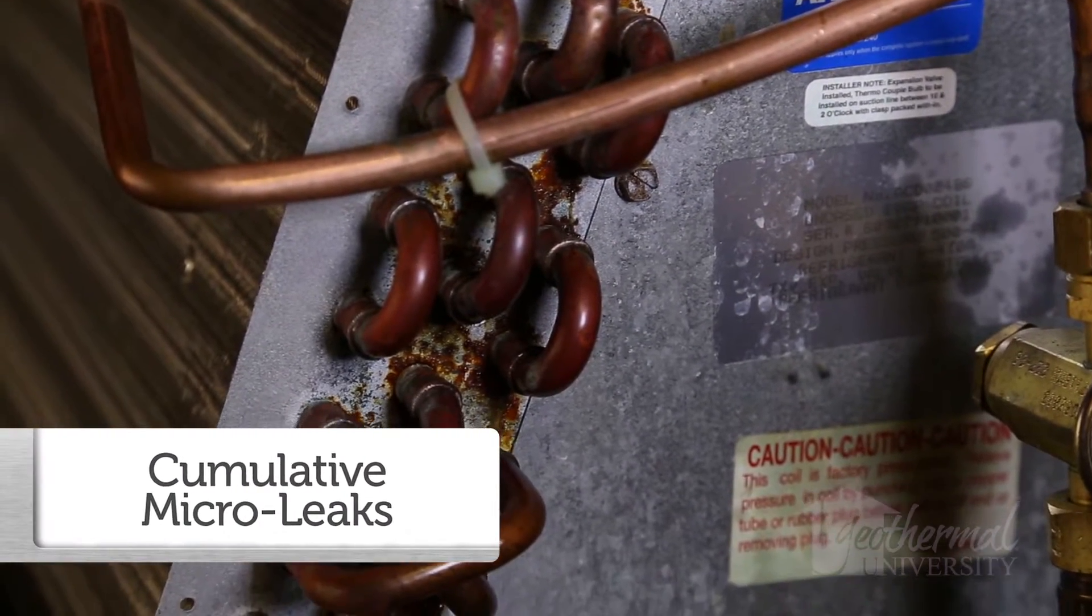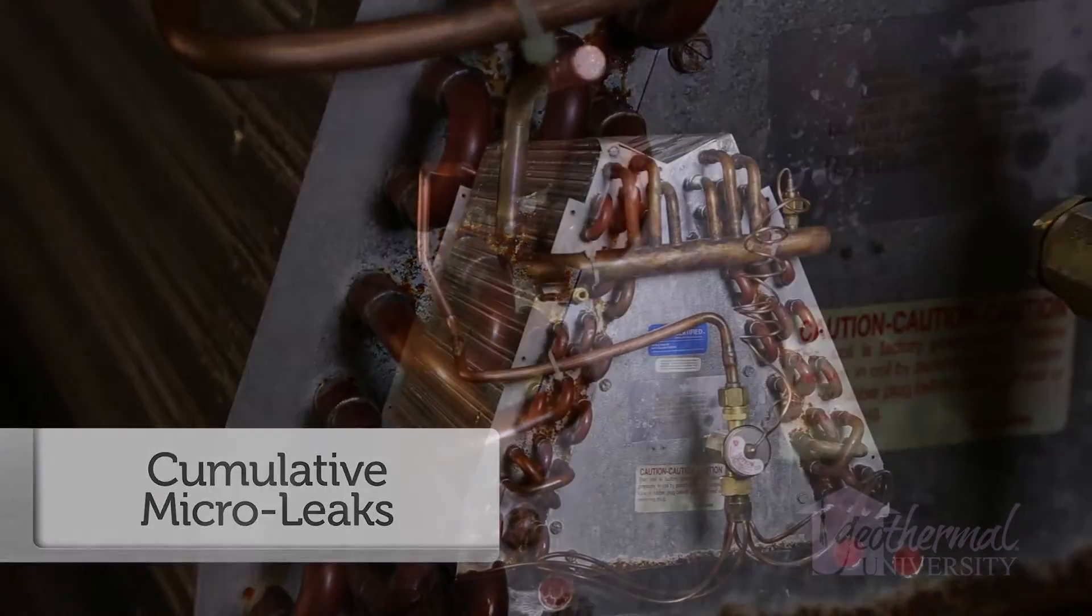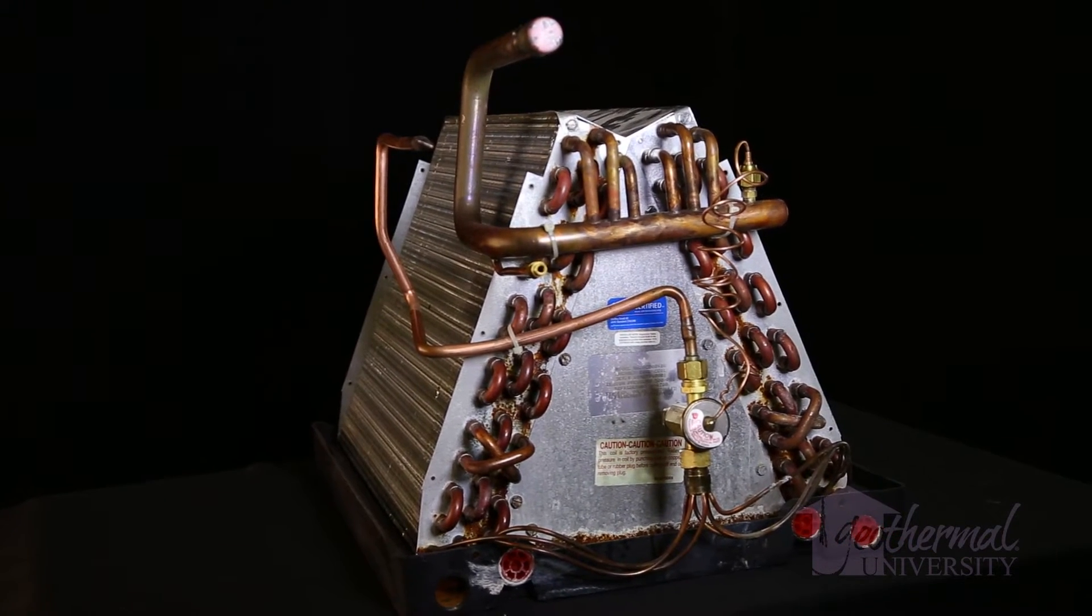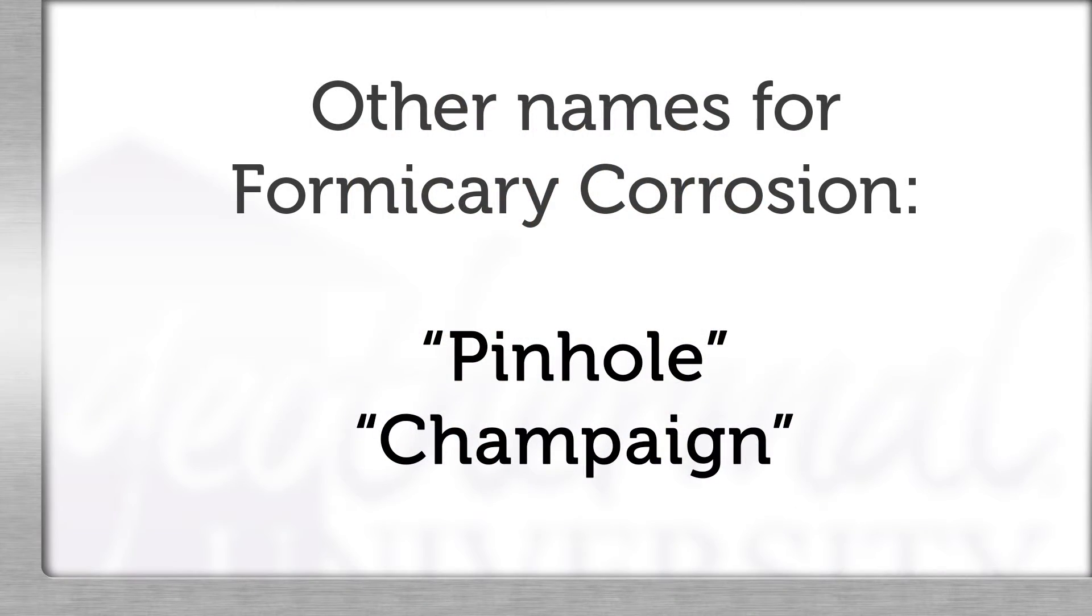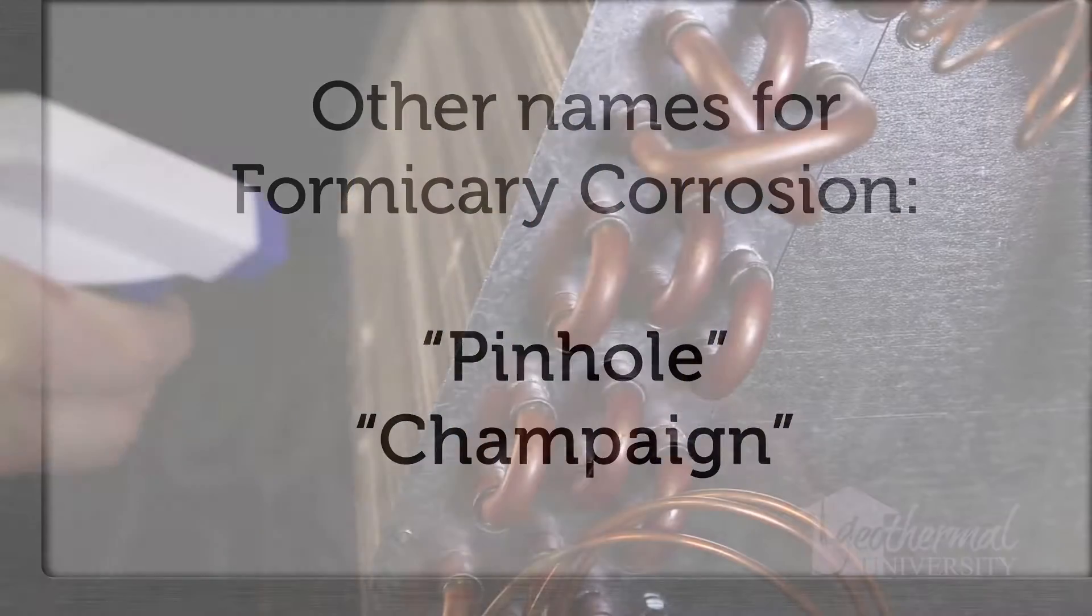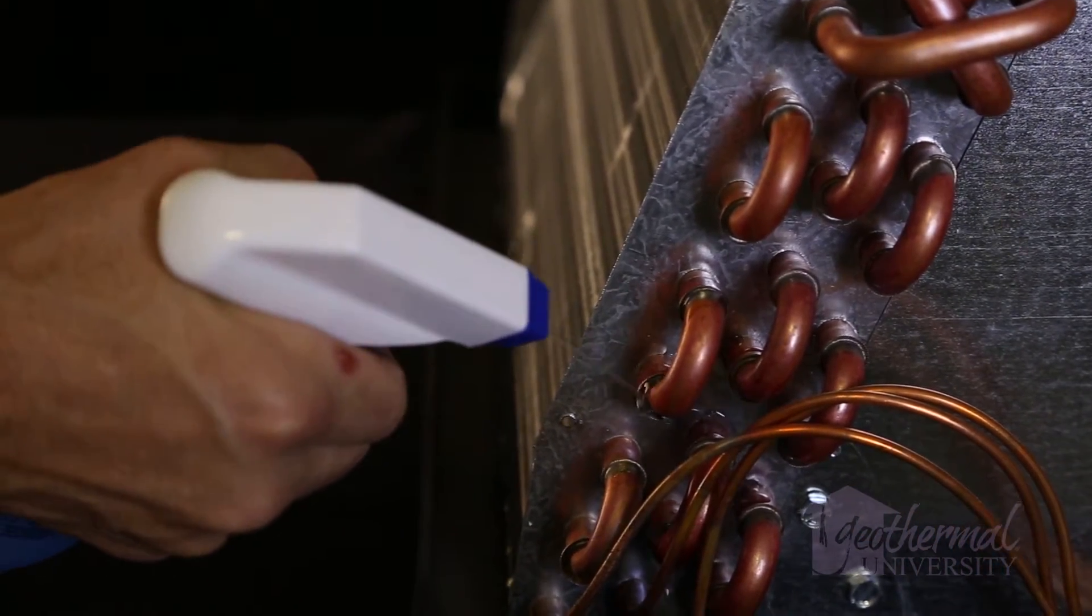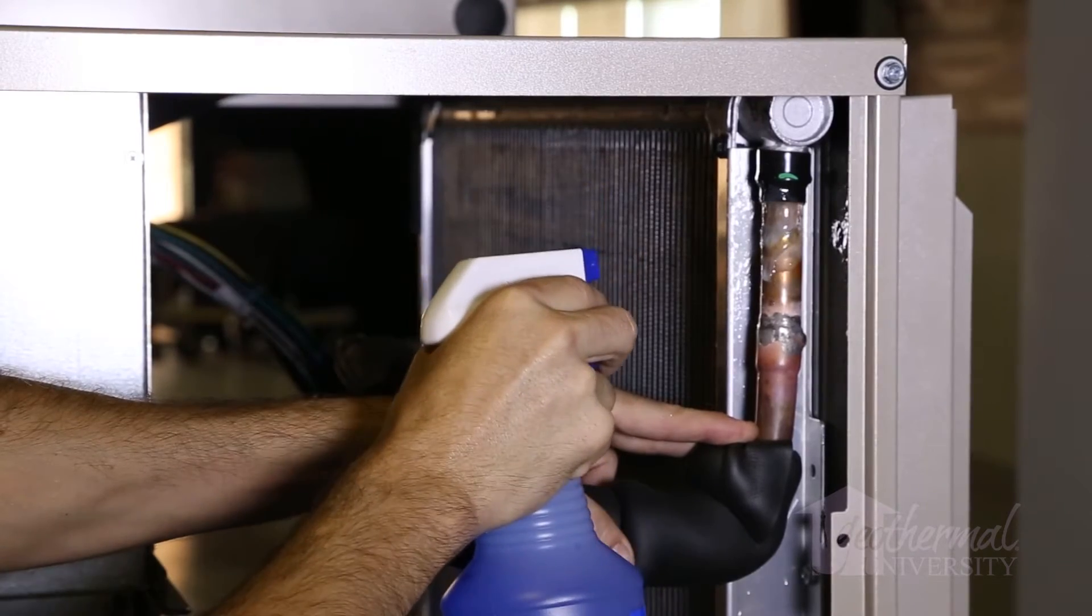Cumulative micro leaks are individual leaks that are too small to detect with standard tools. The total loss over many years of operation slightly reduces the initial gas charge. Pinhole or champagne leaks could be classified as micro leaks. Having knowledge of the classifications of leaks helps the technician understand the underlying cause of the leaks and helps them to troubleshoot a leaky unit.